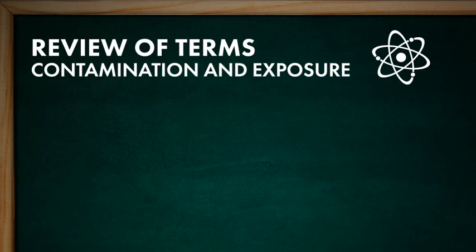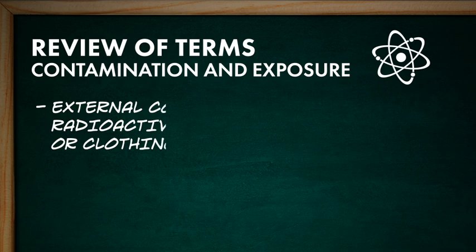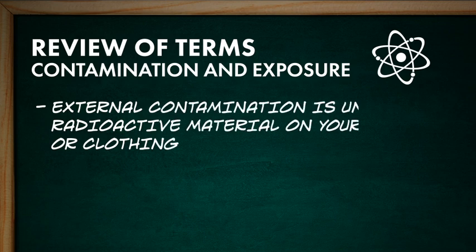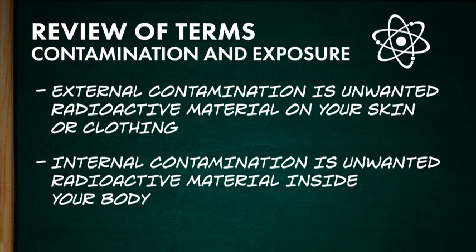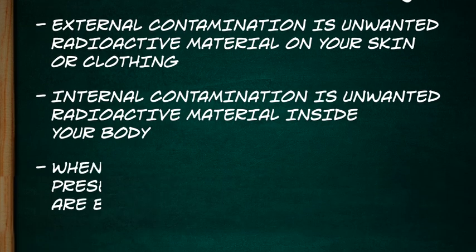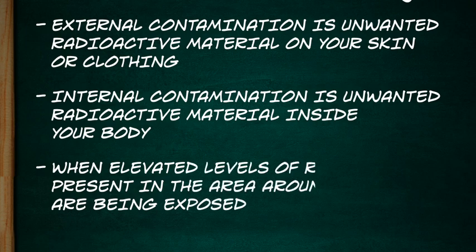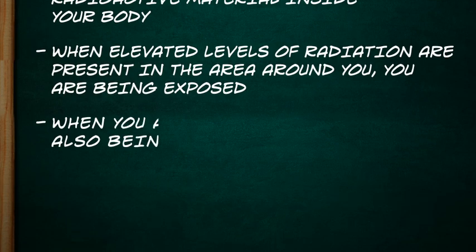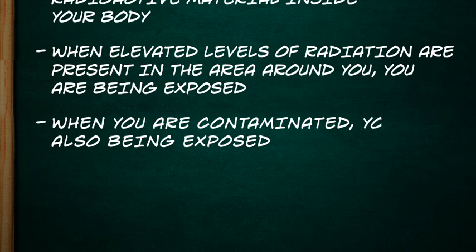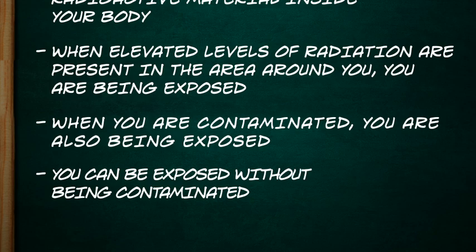Let's do a quick review. External contamination is unwanted radioactive material on your skin or clothing. Internal contamination is unwanted radioactive material inside your body. When there is elevated radiation levels in the area, you're being exposed to radiation. When you're contaminated, you're also being exposed to radiation. But it is possible to be just exposed and not contaminated. It's very important to distinguish the difference between exposure and contamination.